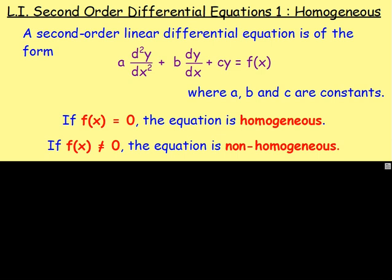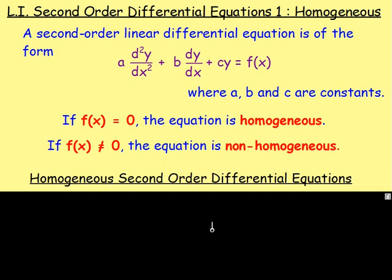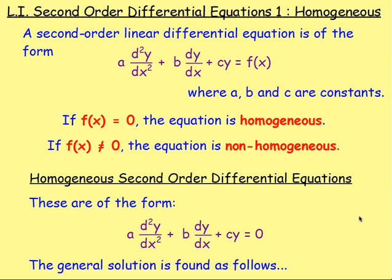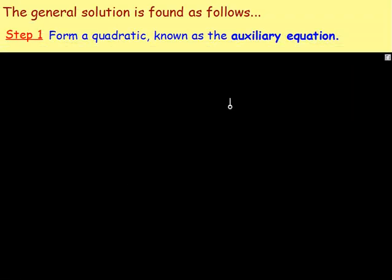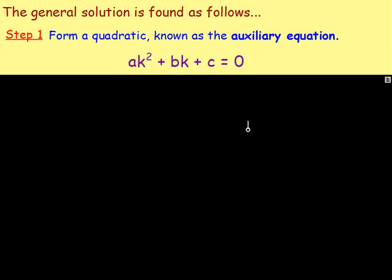Over the next few lessons we're going to look at second order differential equations, but we are going to start by looking at the general solution of homogeneous differential equations. These are of the form a d²y/dx² plus b dy/dx plus cy equals zero. The first thing that we do is we form a quadratic known as the auxiliary equation, and that will look like ak² plus bk plus c equals zero.